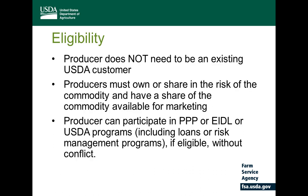A producer does not need to be an existing USDA customer. Processing entities are ineligible. Producers who may have been filing for bankruptcy but were still operating within the mid-January through mid-April period can still apply. Importantly, participation in SBA programs such as the PPP Paycheck Protection Program or the EIDL Economic Injury Disaster Loan does not impact your eligibility for CFAP or any USDA farm program.